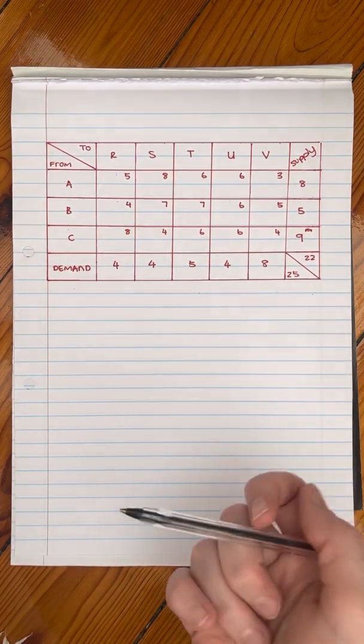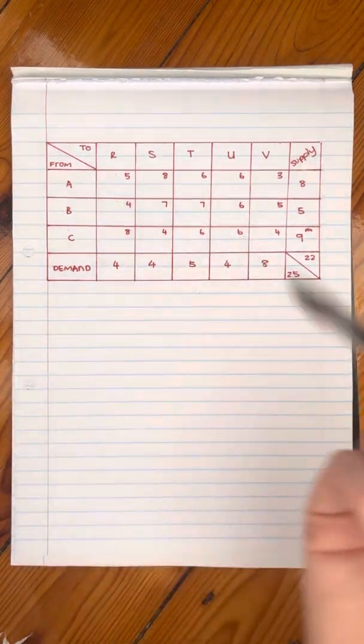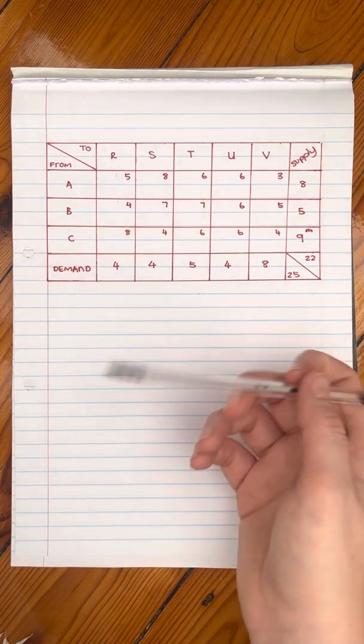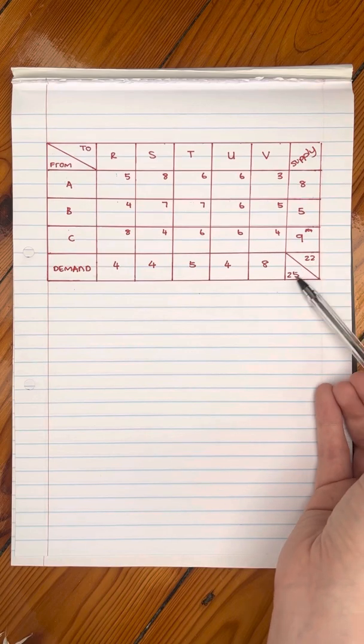And the first thing you're going to have to do when you're doing the northwest corner method is, obviously you set up the table. Now, in this example, you can see that the table is not yet actually finished, because the supply and the demand are not equal to each other.